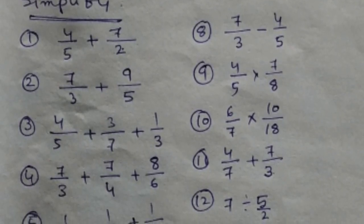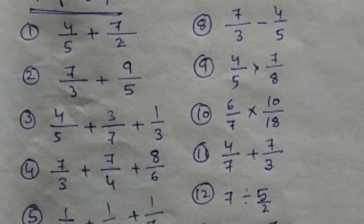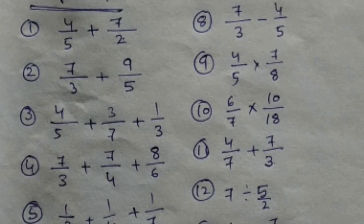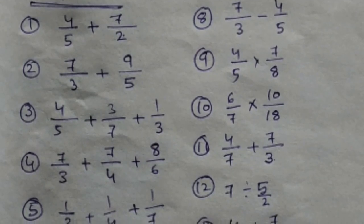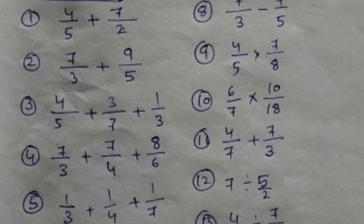Now, homework session 4. Simplify: Number 1: 4 by 5 plus 7 by 2. Number 2: 7 by 3 plus 9 by 5. Number 3: 4 by 5 plus 3 by 7 plus 1 by 3.